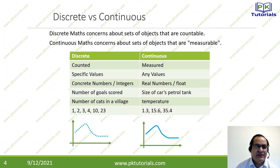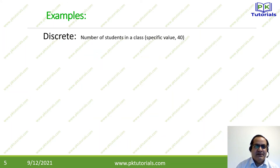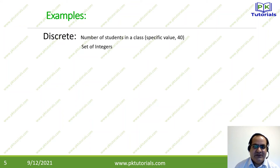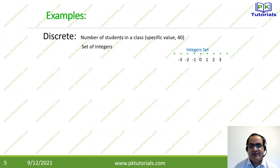Another discrete example is the number of students in a class — for example, 40 students. That is a set of integers. Discrete values are sets of integers: whole numbers starting from 0, 1, 2, 3, and also including negative numbers like minus 1, minus 2, minus 3, minus 4, up to infinity. So discrete values can also be negative, as they are part of the integer set.